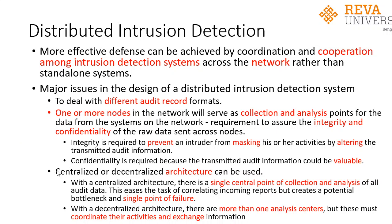The third design issue is what kind of architecture to be used — either centralized or decentralized. With centralized architecture, there will be a single point of collection: one central machine which collects all the audit data, and using that data from different machines, correlation is made and a decision is taken. However, this leads to a single point of failure — if this single machine fails, the whole intrusion detection system fails. In decentralized architecture, there are more than one analysis centers; these machines act as collection and analysis points, and must coordinate among themselves and exchange information to detect intrusions.